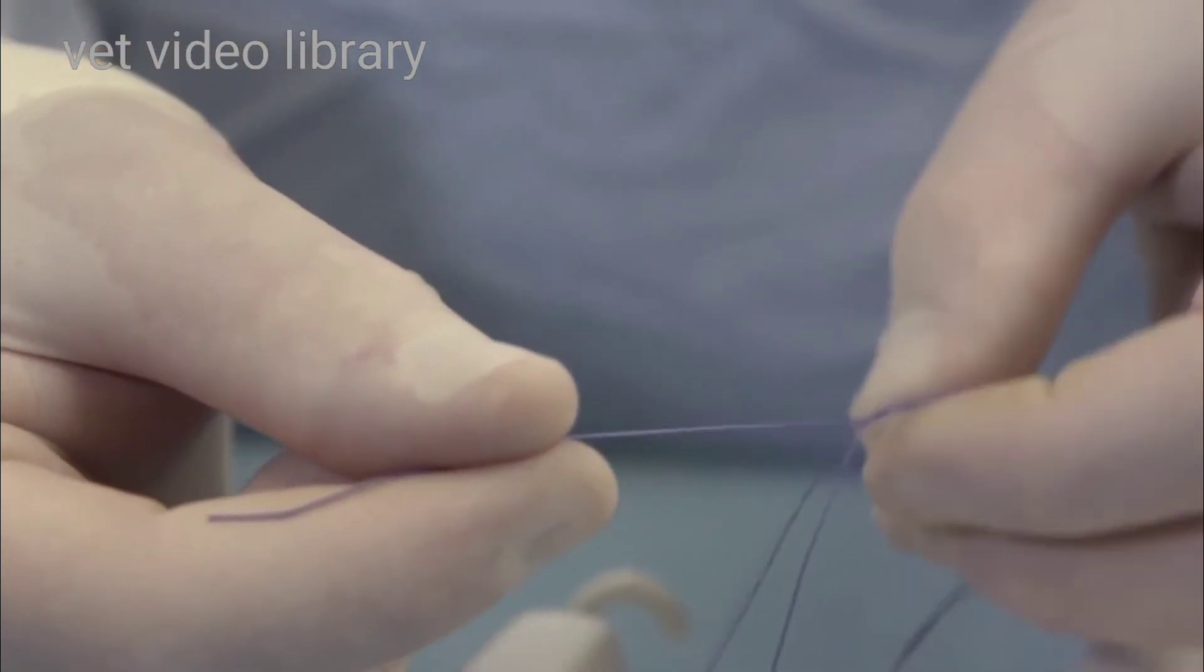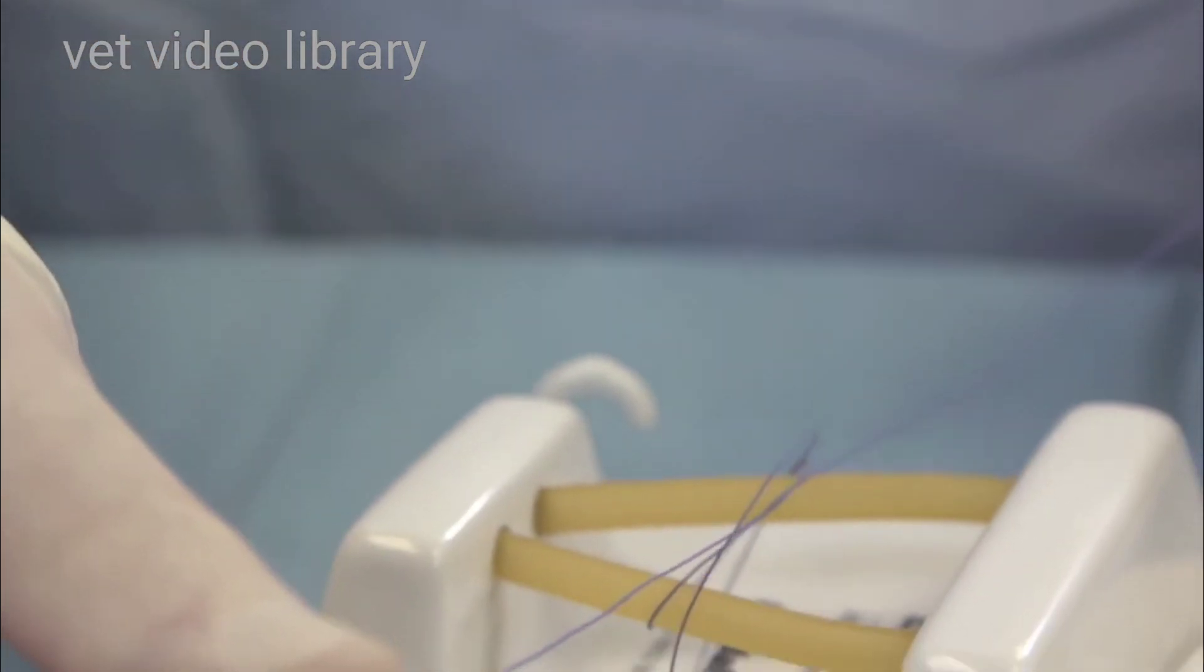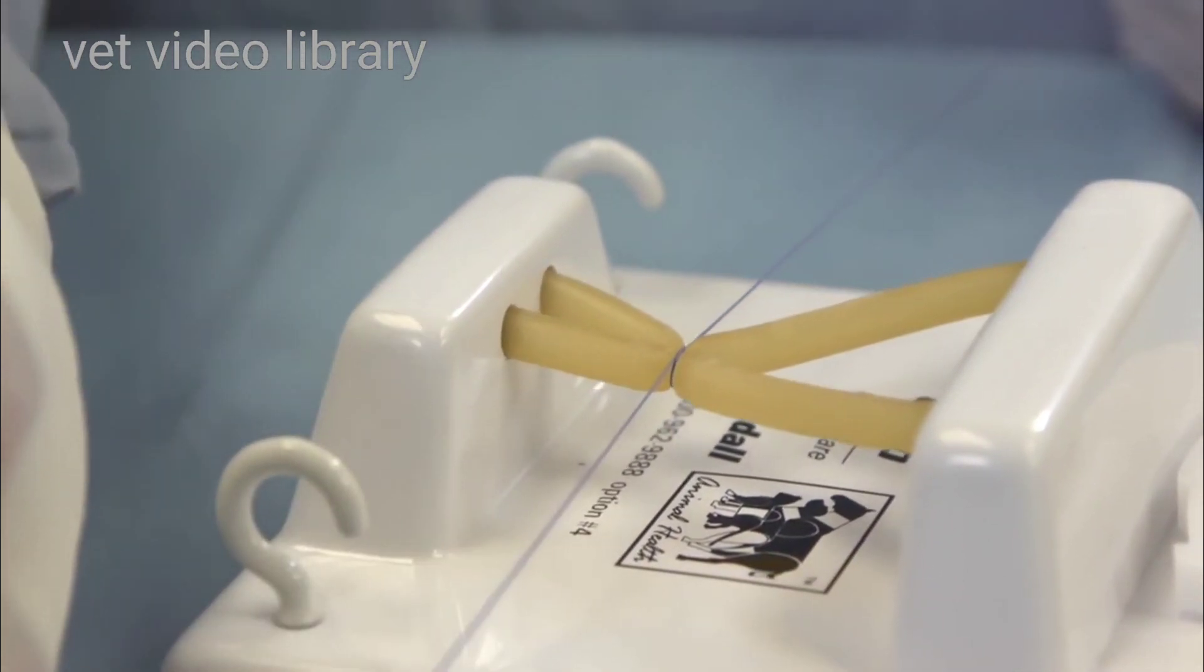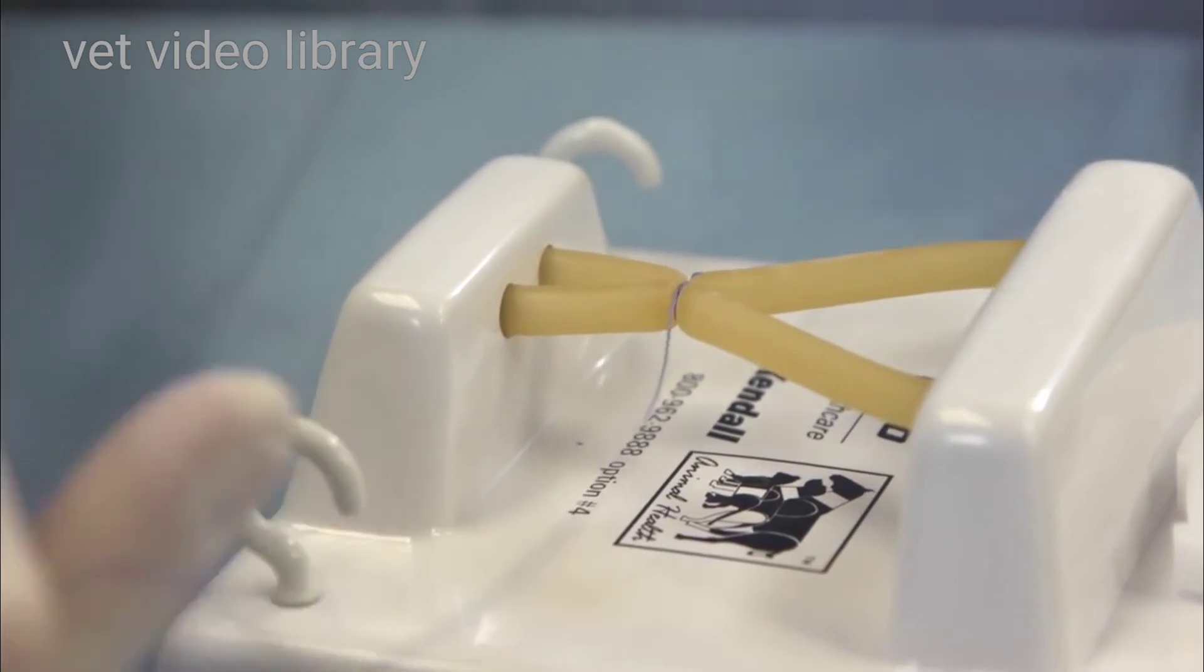And now I have the first part of my Miller's knot. I pull this down, I pull it tight, cinch it down, and it stays there.